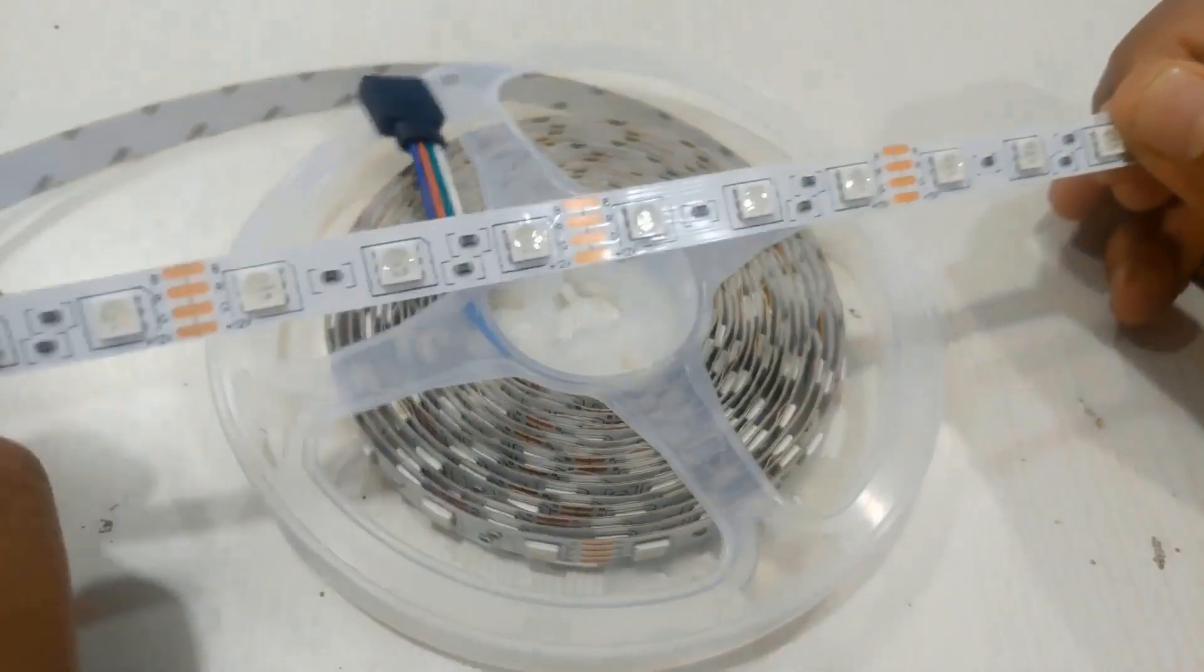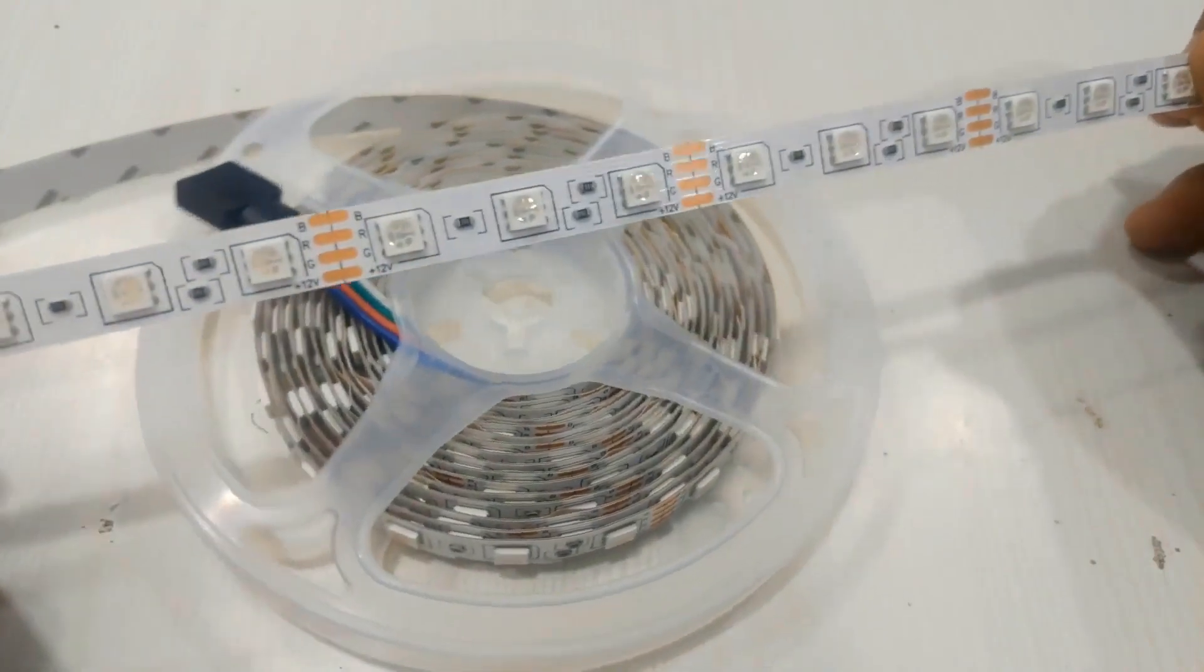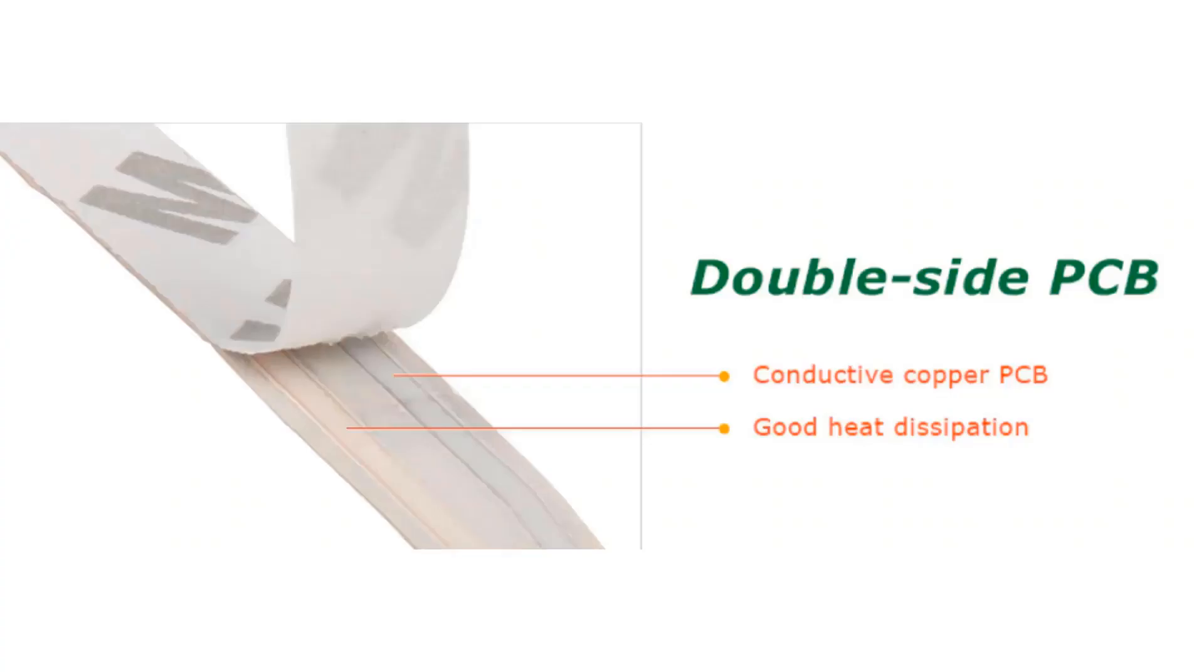As shown in the diagram, you can directly connect the strip to power supply and microcontroller pin in case you have few LEDs, but in case you have many LEDs you need some other logic. The backside of this strip has double-sided copper PCB which has good heat dissipation.